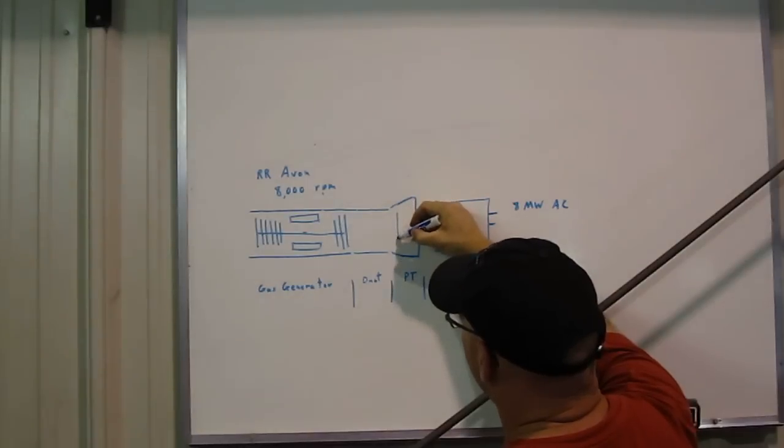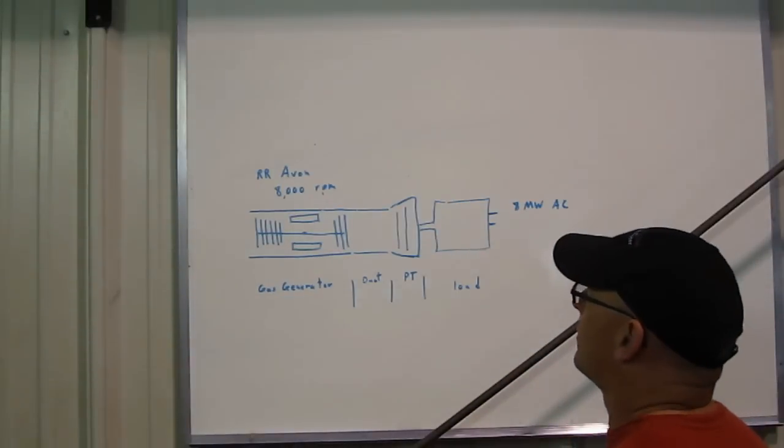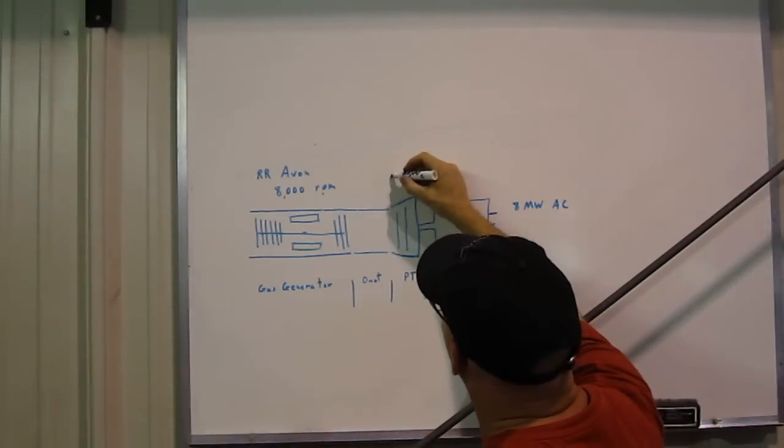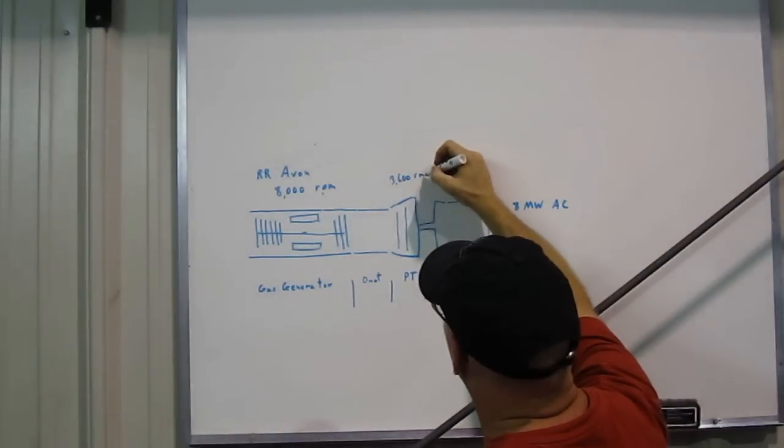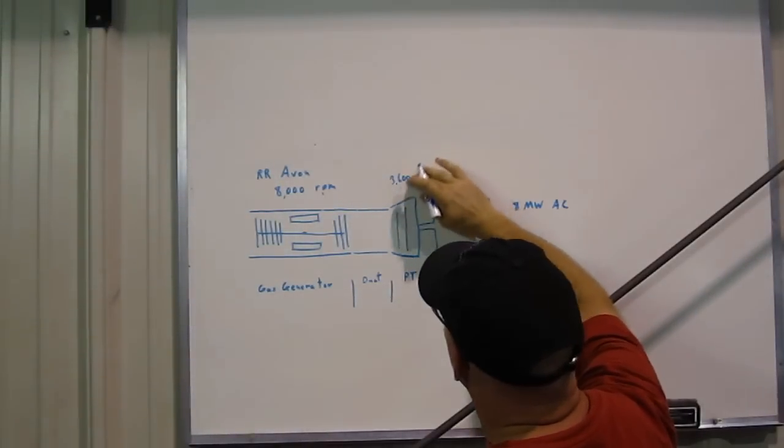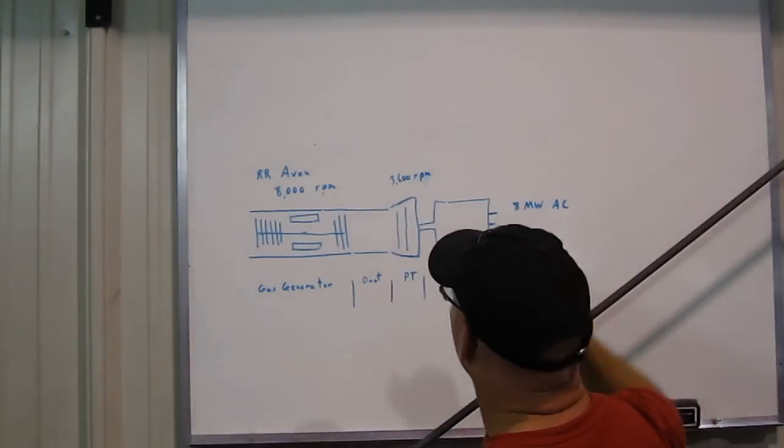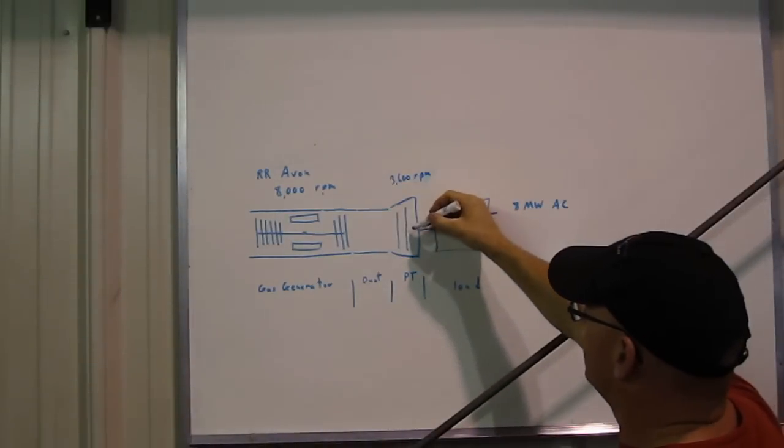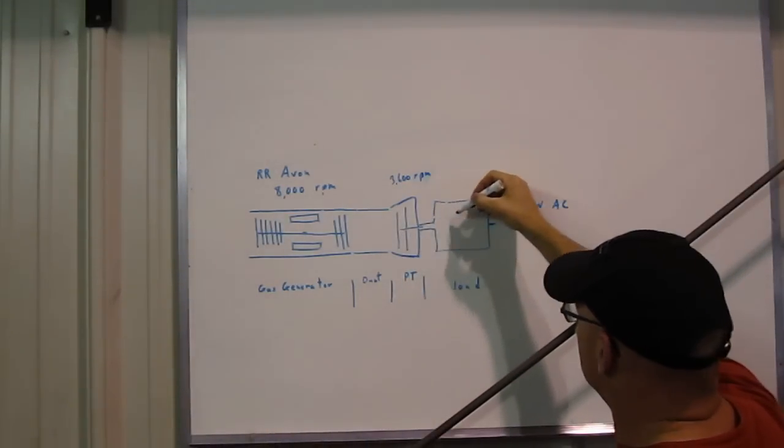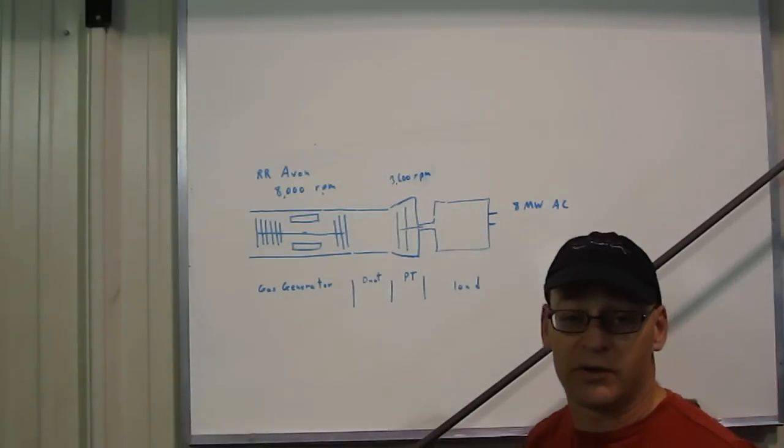The power turbine is, there are various manufacturers. This is a two-stage PT, and it turns at 3600 RPM. And that, in turn, directly drives an electrical generator which produces about 8 megawatts of power.